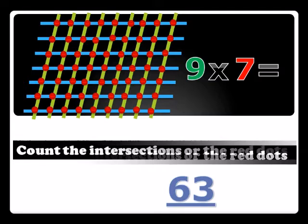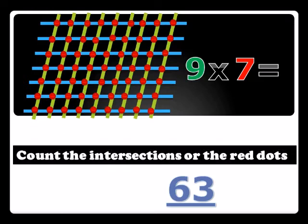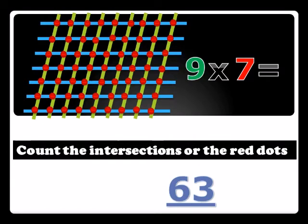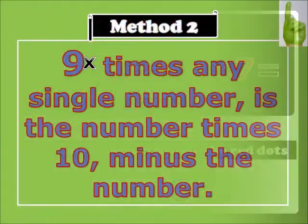That is the easiest way to teach any child multiplication, just by ruling lines and then counting where they meet. So nine times seven is 63. Now we should turn to Method Two. Nine times any single number is the number times 10 minus the number.